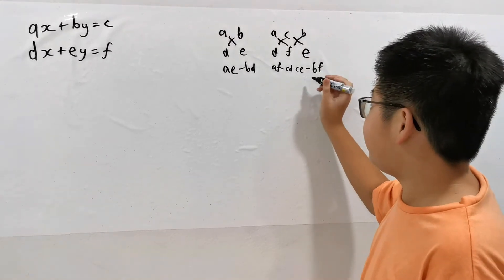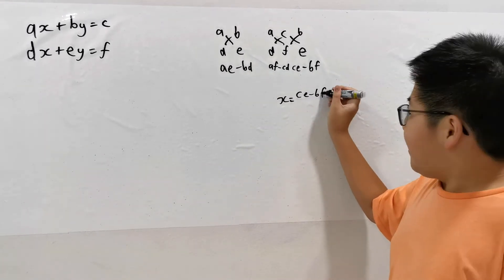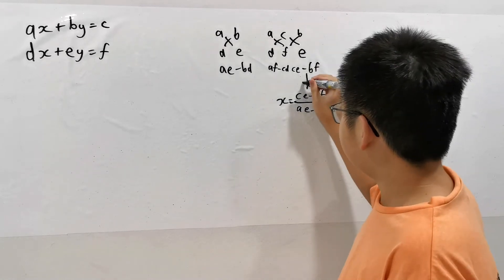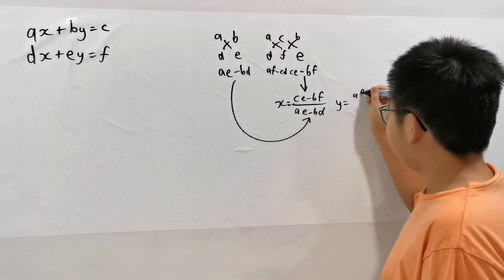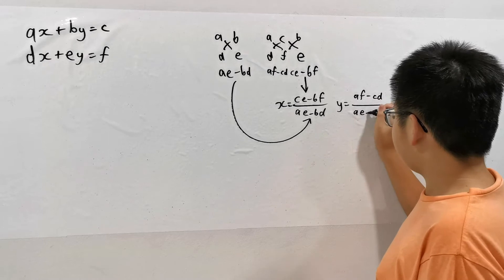And to get X, we need to divide this: C, E minus B, F over A, E minus B, D. And Y equals A, F minus C, D over A, E minus B, D.